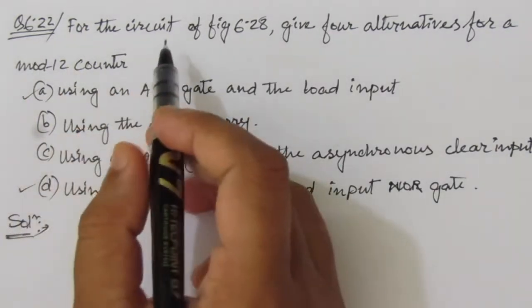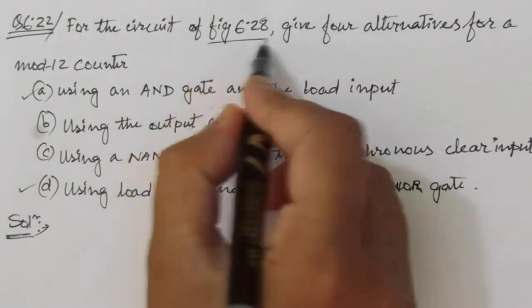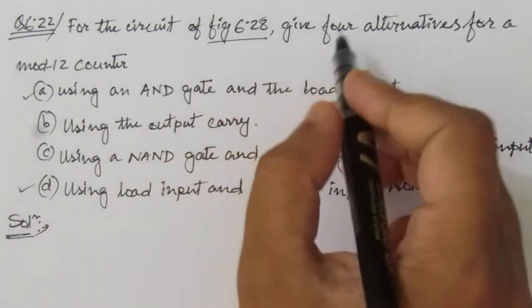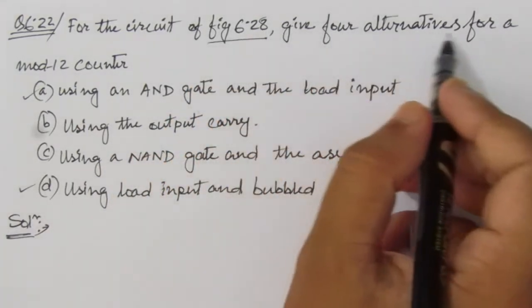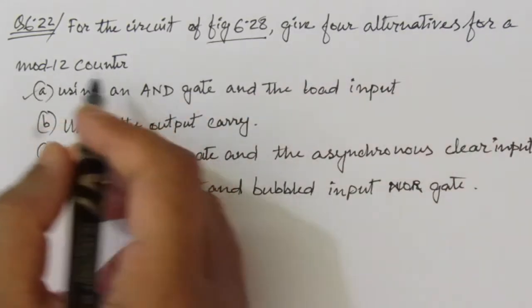The problem is for the circuit of figure 6.28 — we will see this figure from the book — and give 4 alternatives for a mode 12 counter.